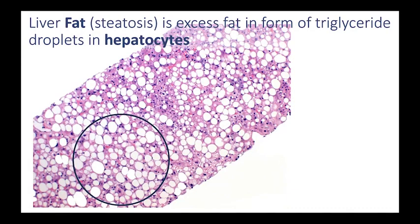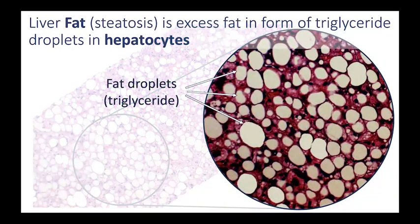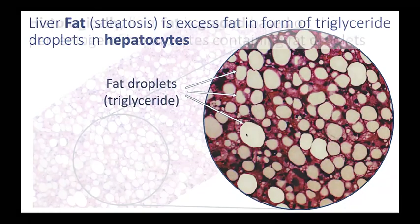Now let's review fat accumulation. Fat accumulation, also known as steatosis, refers to excess fat in the form of triglyceride droplets in hepatocytes. When we magnify this histologic slide, we see vacuoles within the hepatocytes, and these vacuoles represent fat droplets. So in steatosis, we have fat droplets — mainly triglyceride — within hepatocytes. The fat does not actually infiltrate into the liver parenchyma; instead, the fat is contained within hepatocytes.